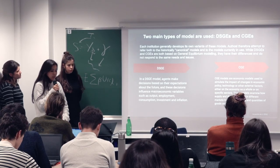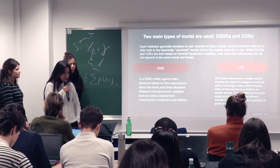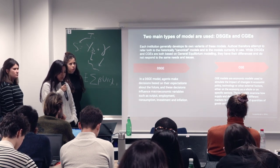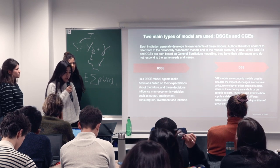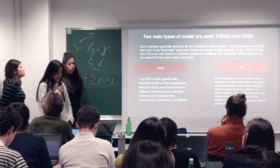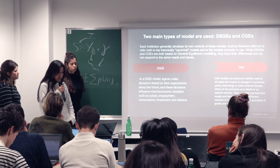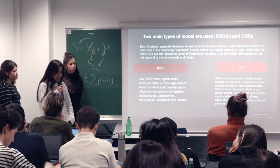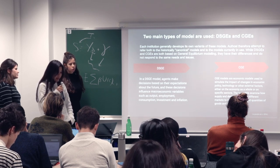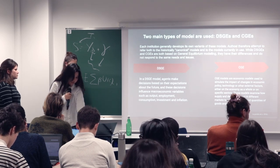There are two types of models: DSGE and CGE. Each institution generally develops its own variation of these models. Authors attempt to refer to both the historic canonical models and the models currently in use. In DSGE models, agents make decisions based on their expectations about the future, influencing macroeconomic factors. CGE models simulate the impact of changes in economic policy, technology, and specific sectors, examining how supply and demand interact to determine prices and quantities in markets.